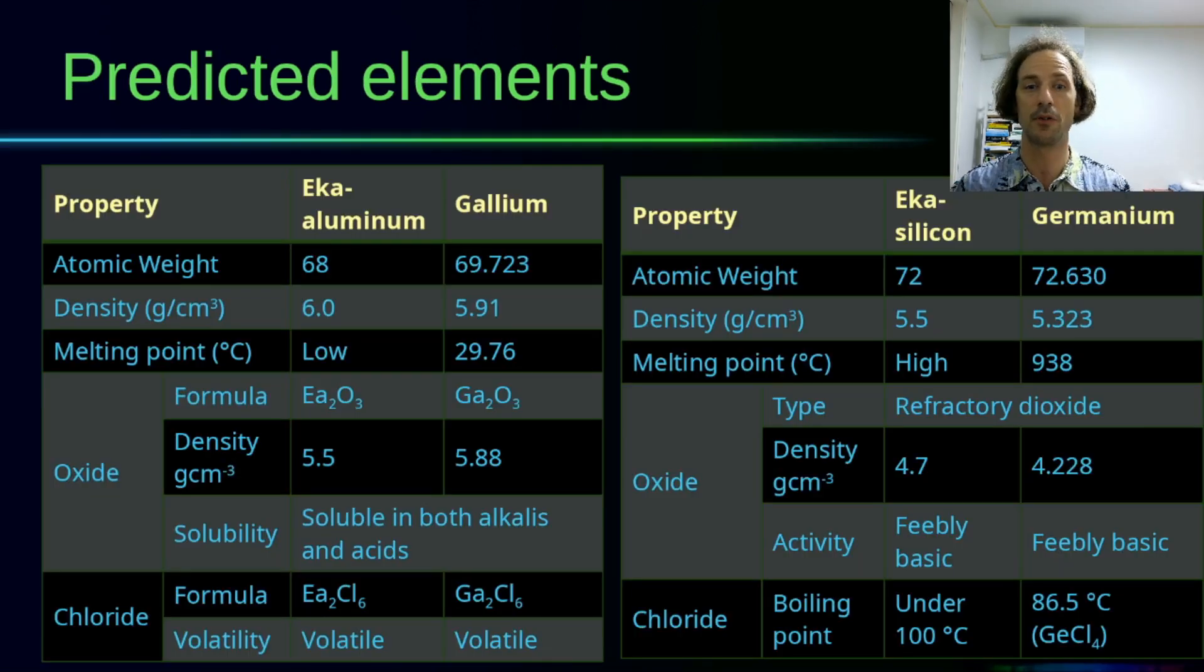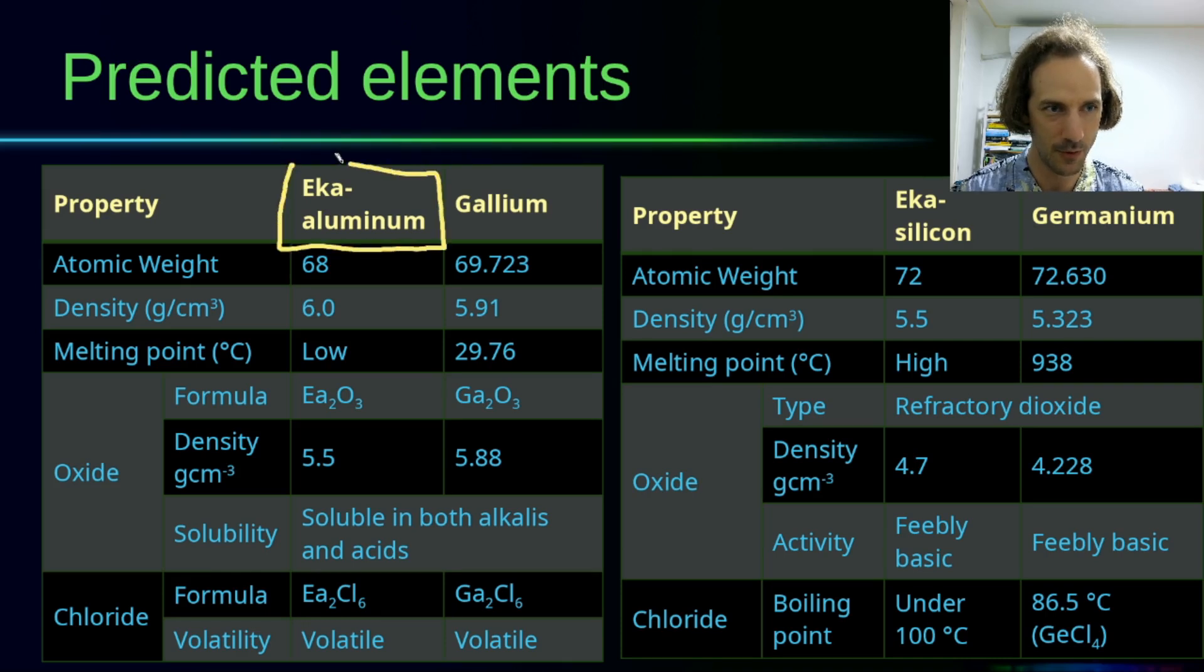He actually predicted the properties of elements that haven't been discovered yet. Eka-aluminum is the name he gave to the element that is below aluminum, and the properties you can see here are what he predicted for this eka-aluminum to be. When gallium was discovered, you can check how good the predictions were.